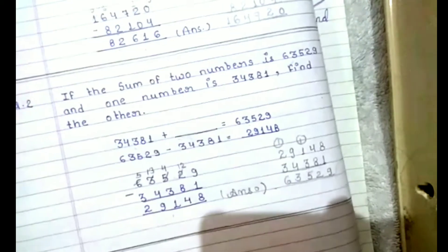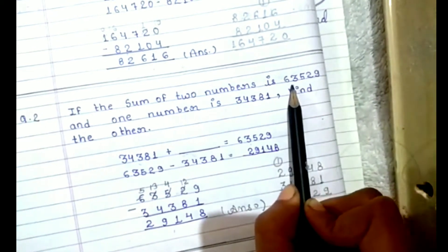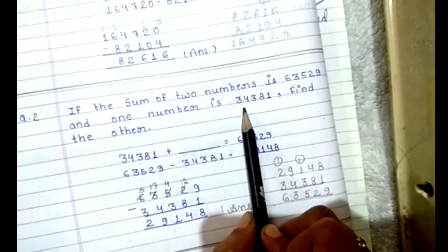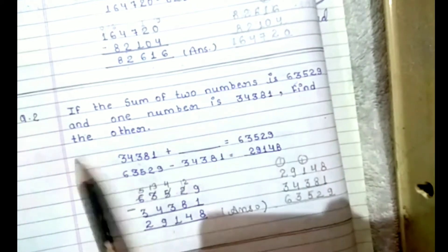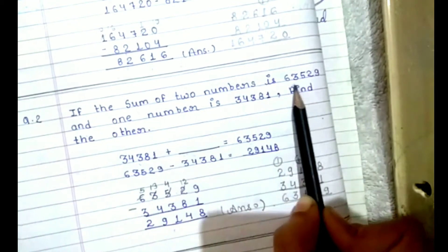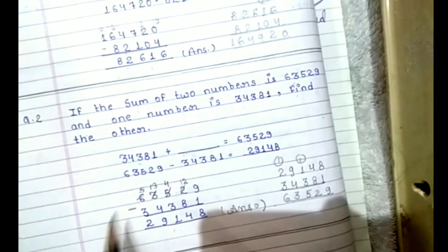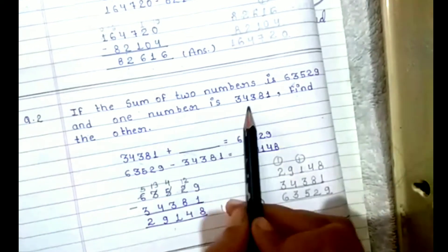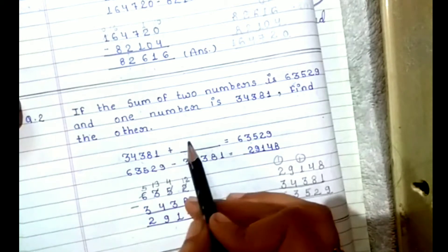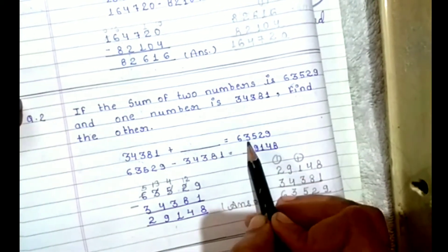आपका second question है: if the sum of two numbers is 63,529 and one number is 34,381, find the other. That means कि आपका sum 63,529 है, and one number is 34,381 - that means आपका एक number ये है और एक number आपको निकालना है, मतलब इसमें ऐसा क्या plus किया जाए कि ये वाला number आ जाए।